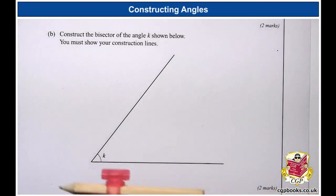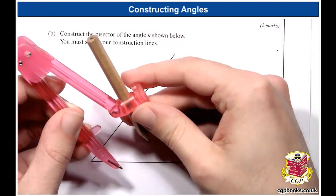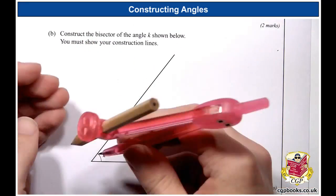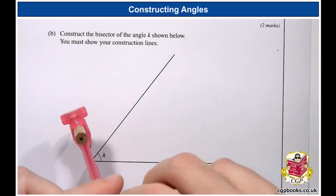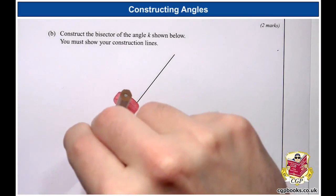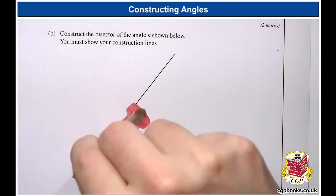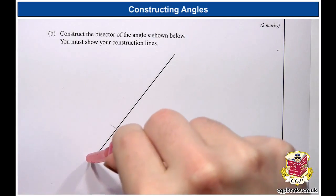So again, I'm going to go and bring in the compass. Set it to a nice distance. And then I need to put the point on point K like this. I need to draw an arc that goes across this line. And one for the other line as well.